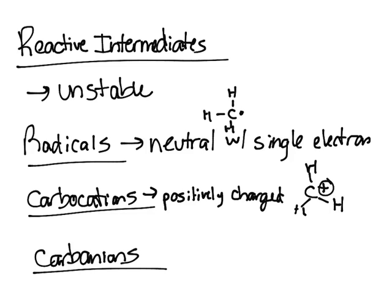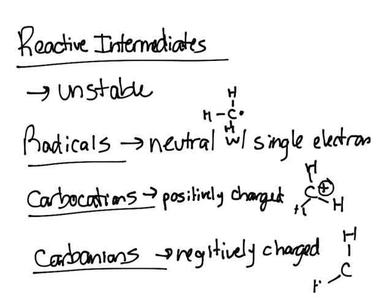The carbanion is negatively charged with a lone pair. It would be C-H-H-H with a lone pair there, giving it a negative charge.